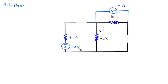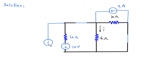Again we will convert this 10 volt into its equivalent current source. The direction of that current source will be downwards because the polarity is in this direction. Current is equal to voltage divided by resistance, so this will be 10 by 10 which is 1 ampere.